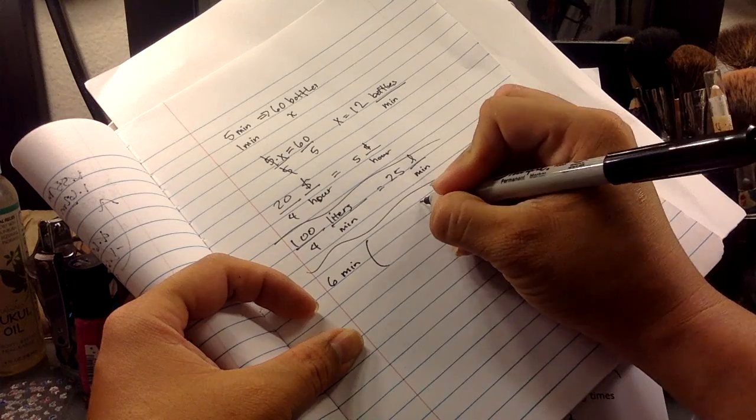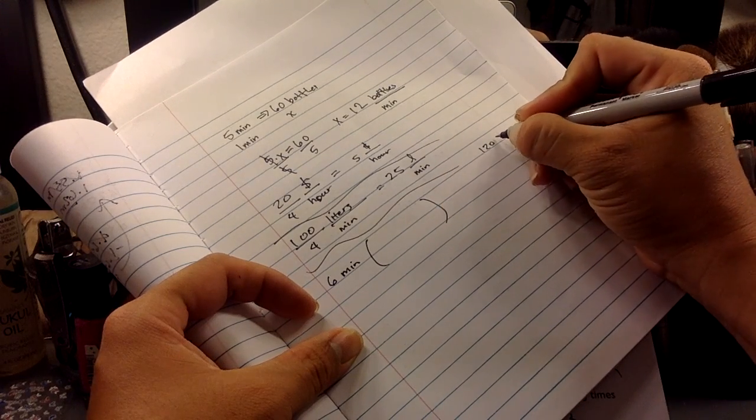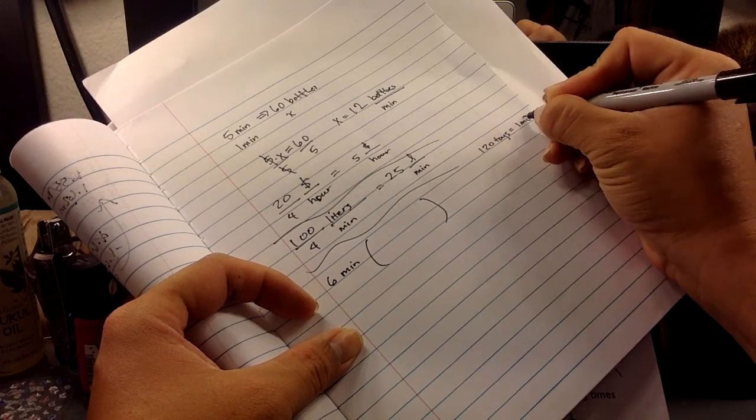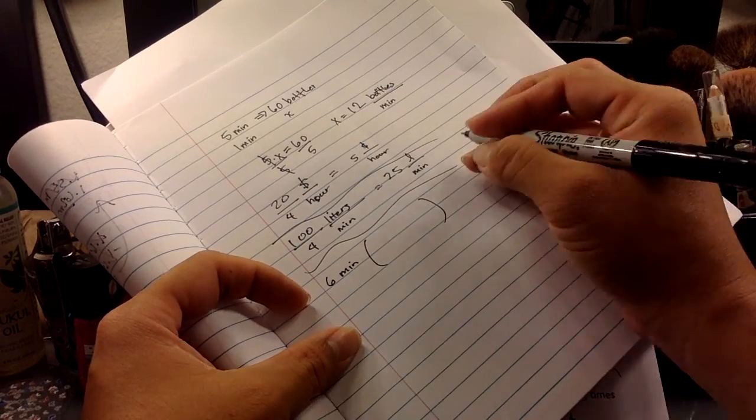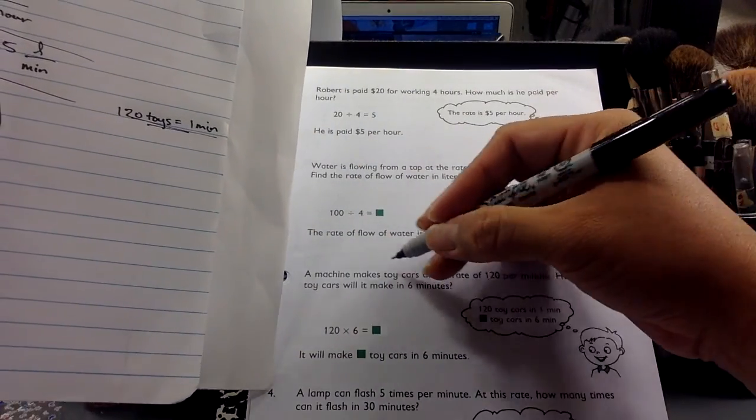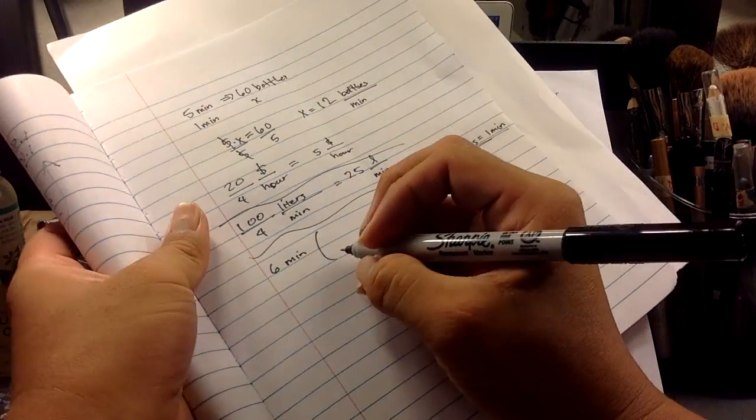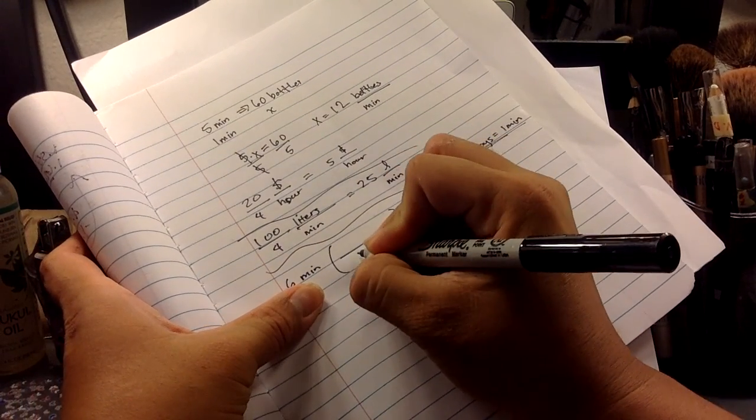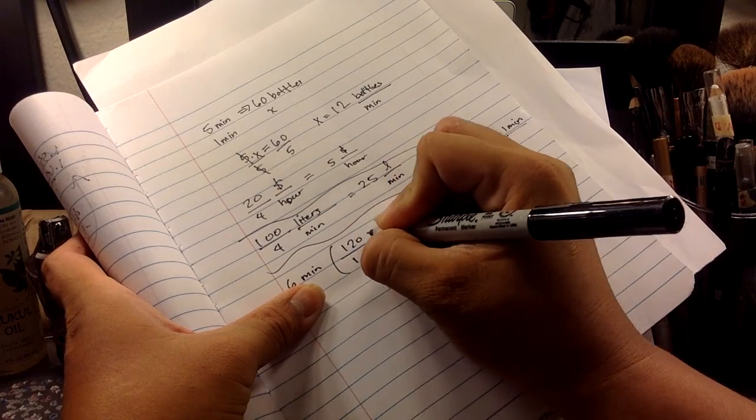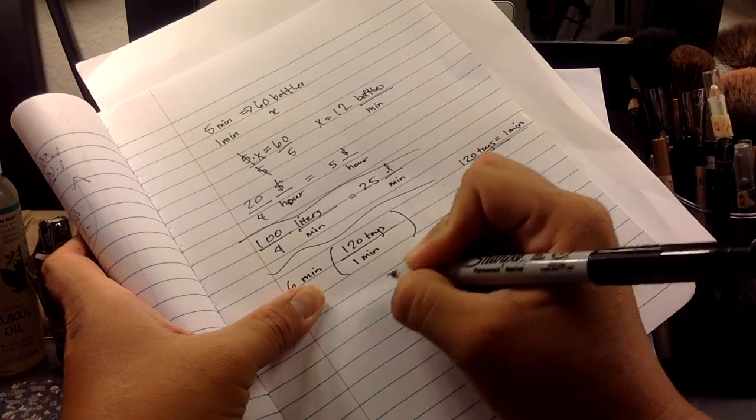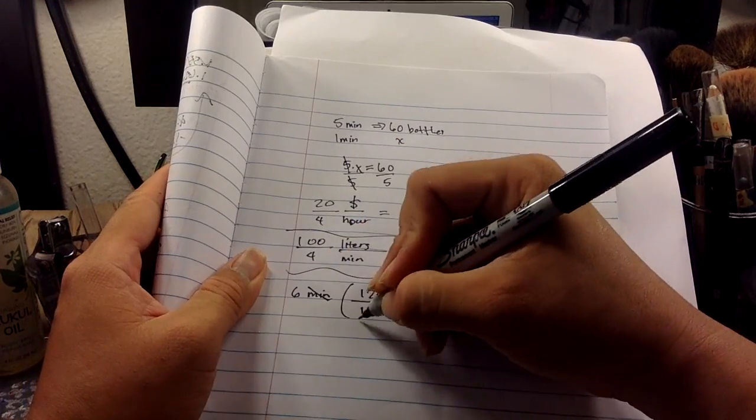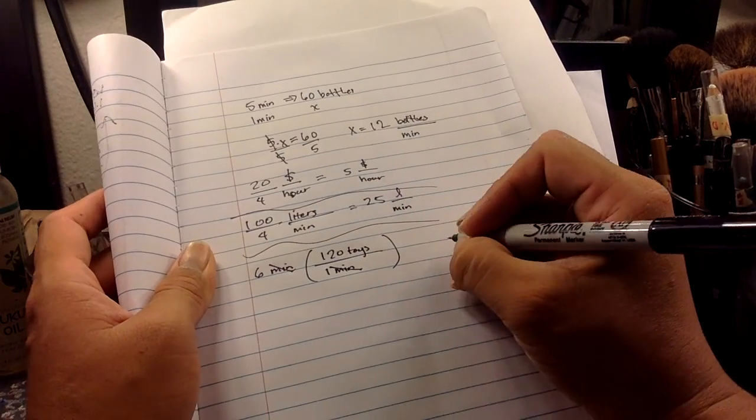And I want to, I know that 120 toys equals one minute. This is a conversion. That's the problem that they told me. They gave me this information in here. 120 cars per minute. So I'm going to divide this by one minute and put the 120 toys at the top. This is a conversion. You cancel out this minute and that minute and that minute. You multiply six times 120.